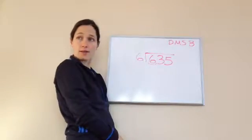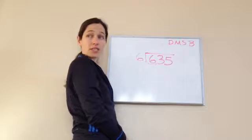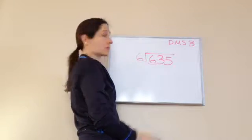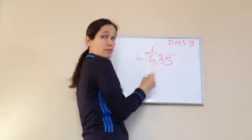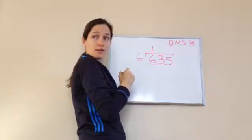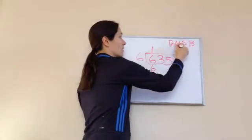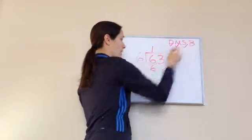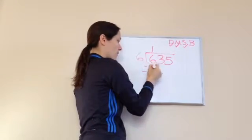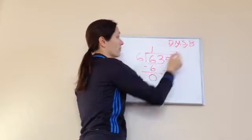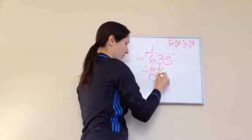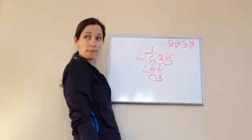Will 6 go into 6? I think. Yeah. 6 times 1? 6. 6 times 1 is 6. So I'm going to put in 1. 6 times 1. So I'm going to divide it. Now, 1 times 6 is 6. I'm going to multiply. Now I'm going to subtract. 6 take away 6 is 0. And I'm going to bring down. See that?